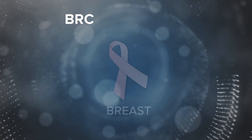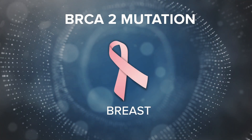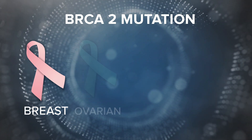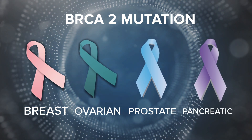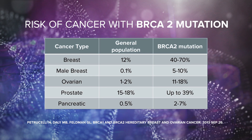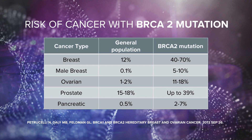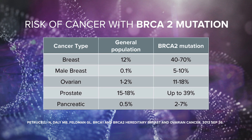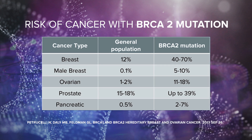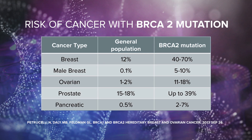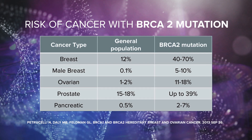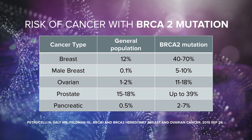Along with breast cancer, mutations in the BRCA2 gene are associated with an increased risk of other cancers, including ovarian, prostate, and pancreatic. In this chart, you can see approximately how much a patient's risk of certain cancers is increased by a BRCA2 mutation. Knowing that your patient has a mutation in BRCA2 allows you to recommend increased surveillance for other associated cancers. For example, you might recommend a transvaginal ultrasound and the CA125 blood test in order to screen for ovarian cancer.